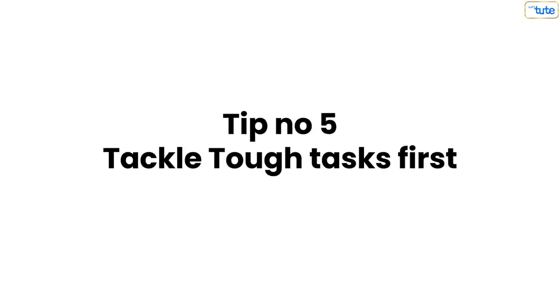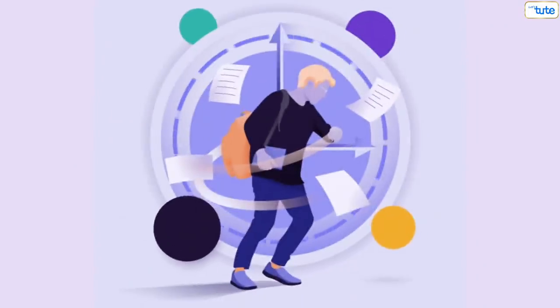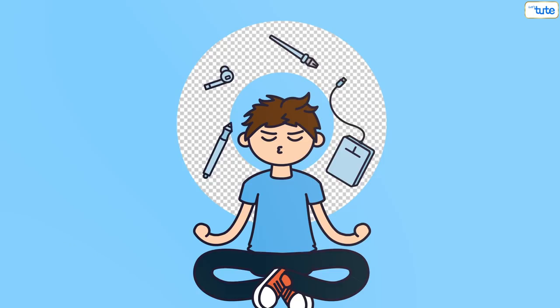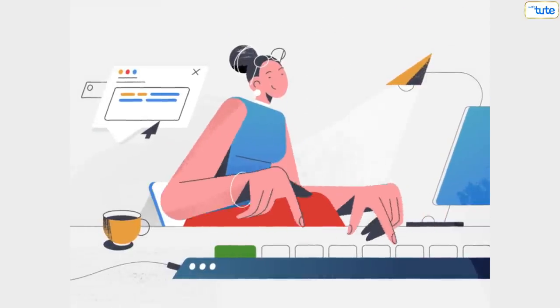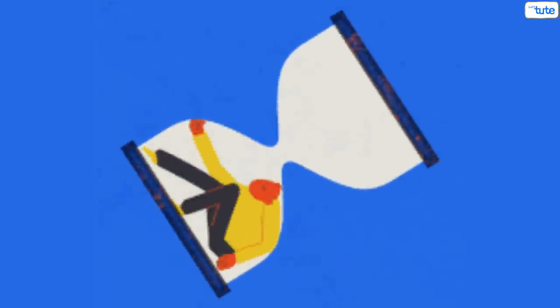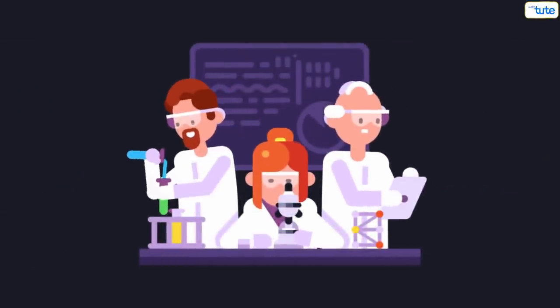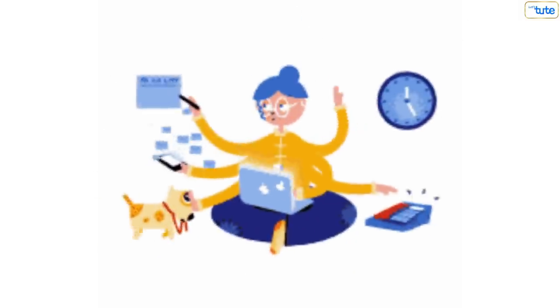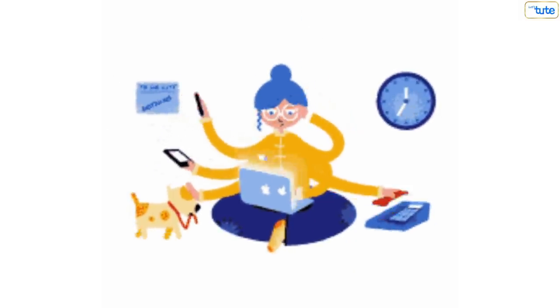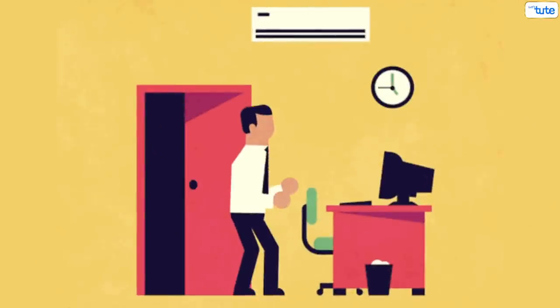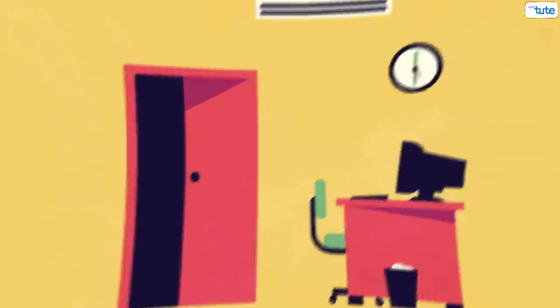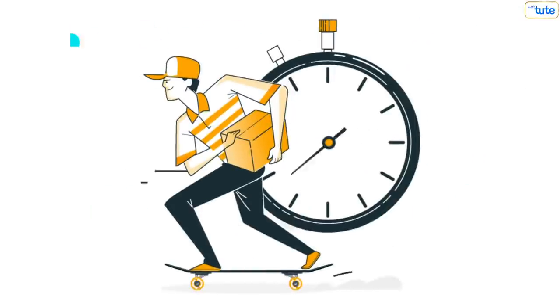Tip number 5: Tackle tough tasks first. This time management tip really works if you have a difficult task or project ahead of you. Many of us get tempted to put off the hardest tasks. But, trust us, if you want to avoid wasting time, then this is recommended by many researchers to get the harder tasks out of the way as soon as possible. This step is very effective because when you complete a hard task first, you feel less burdened and more productive due to which you are able to complete the remaining tasks faster.